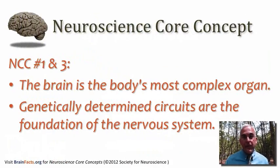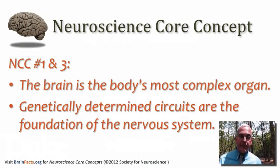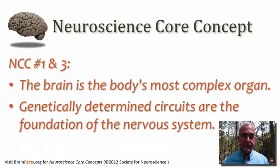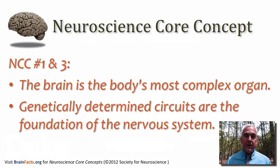This topic pertains to two of our core concepts in the field of neuroscience. The brain is the body's most complex organ, and secondly, what we encounter again is a discussion of circuitry. That circuitry is largely genetically determined, and it provides the foundation for function in the nervous system.